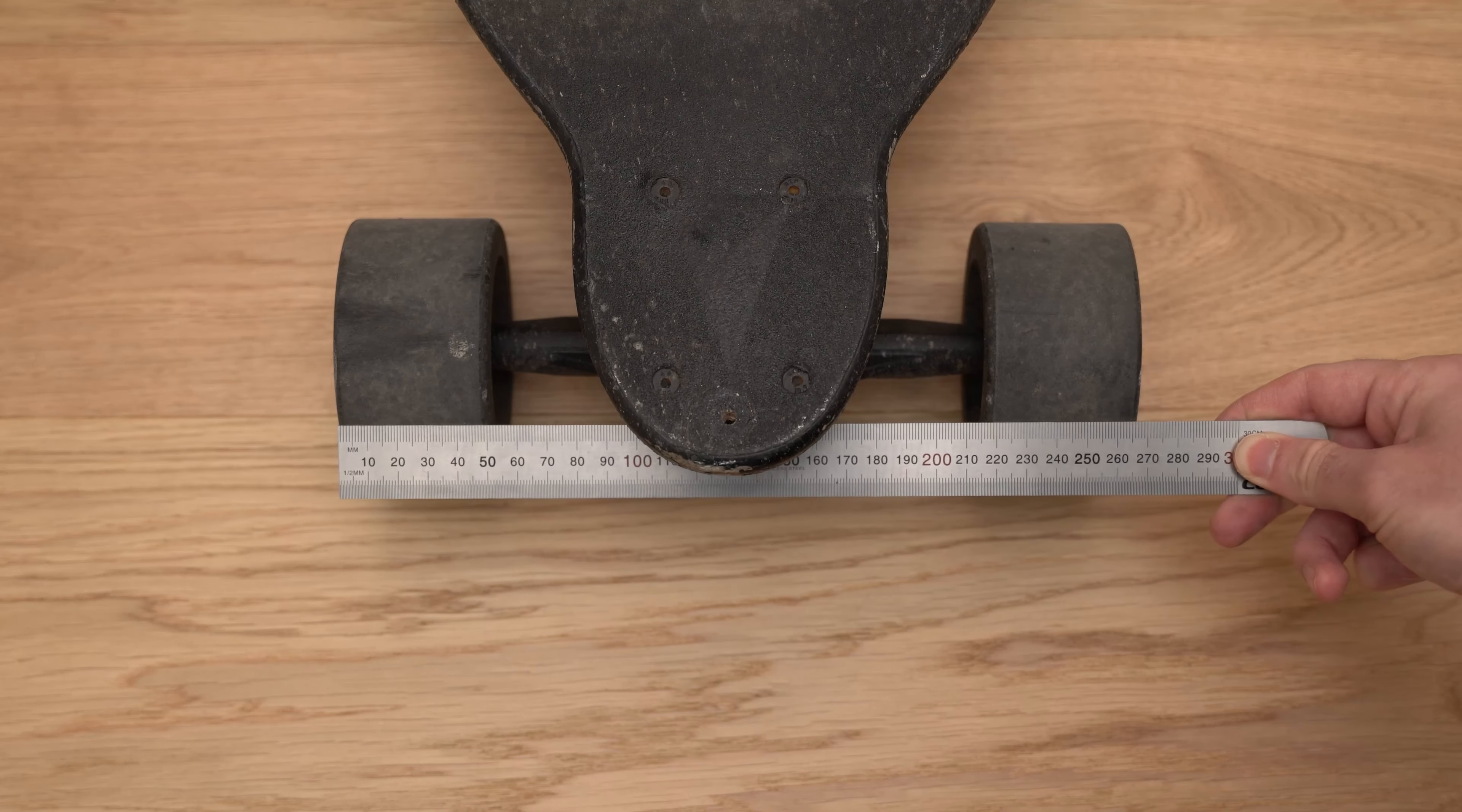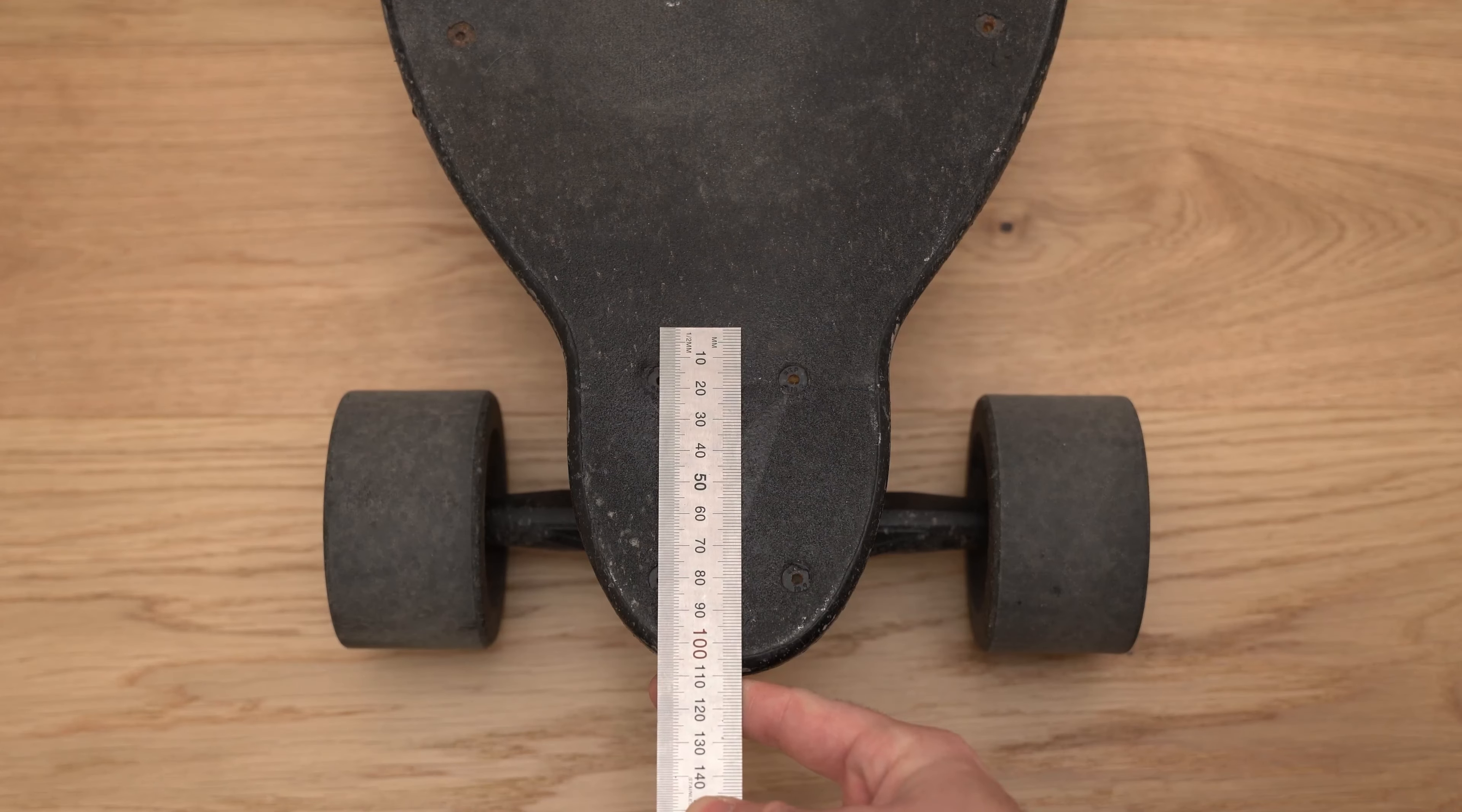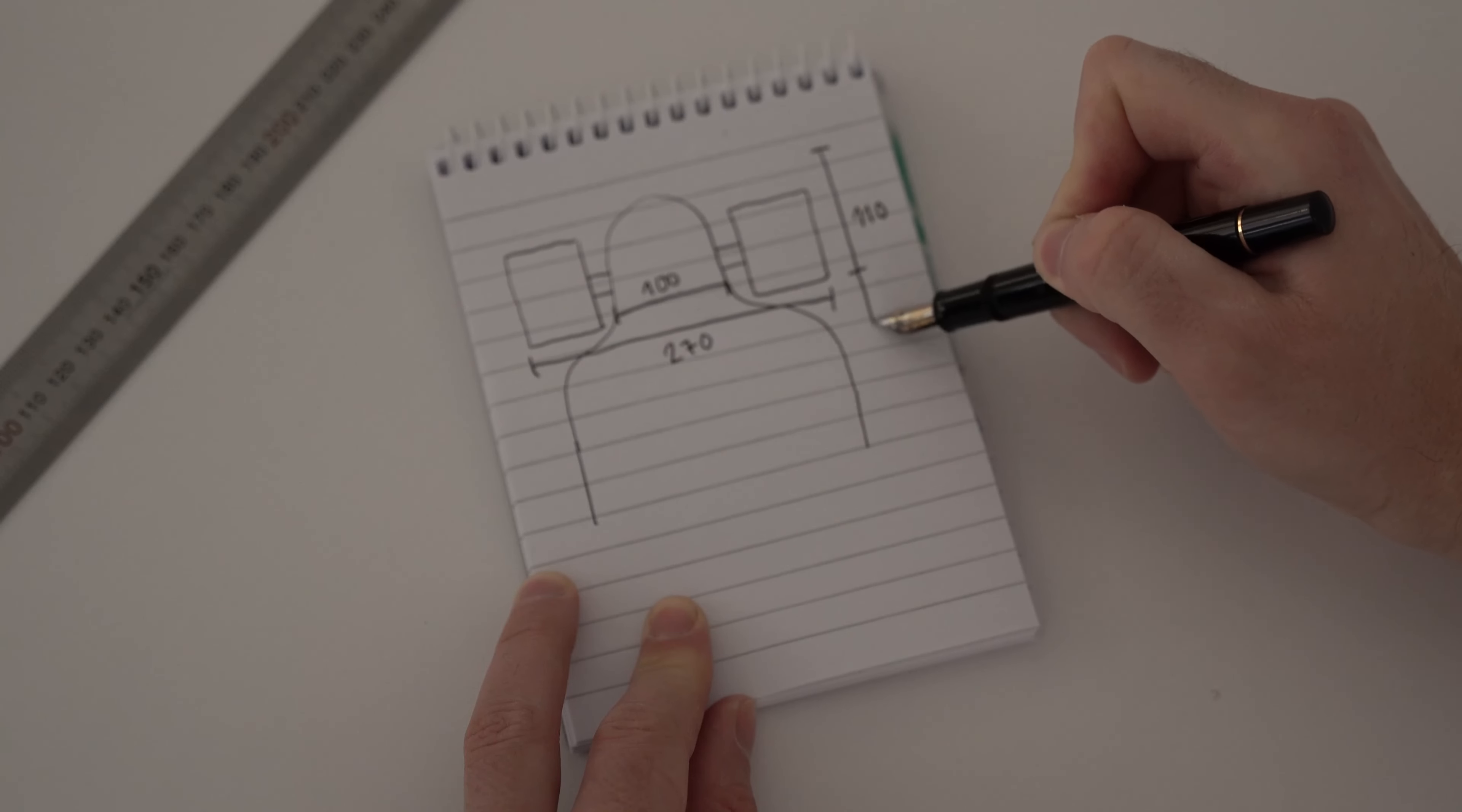You need to know the full width, the length and width of your nose and tail, as well as an estimated length of the guard itself to make sure it covers the wheels properly.